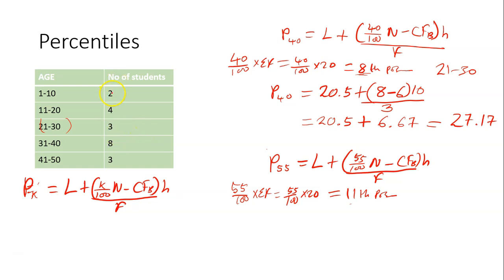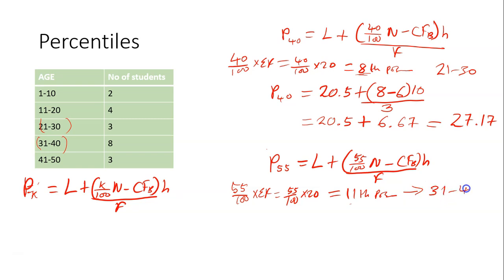So let's look for the 11th position. This is 2. Add 4 to get 6 — not up to 11. Add 3 to get 9 — not up to 11. Then add 8 to get 17. Meaning at this point you can get the 11th position within this class. So the 11th position class is class 31 to 40.